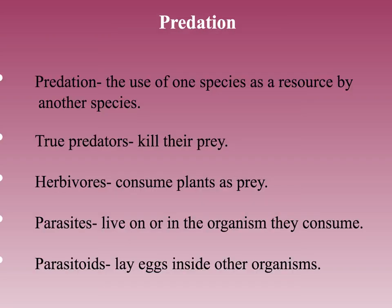Next we have predation — the use of one species as a resource by another. True predators kill and consume their prey. Herbivores consume plants but do not consume the entire plant most of the time, so it will grow back. Parasites live on or in the organism they consume. Parasitoids lay eggs inside other organisms so their offspring grow inside those organisms.